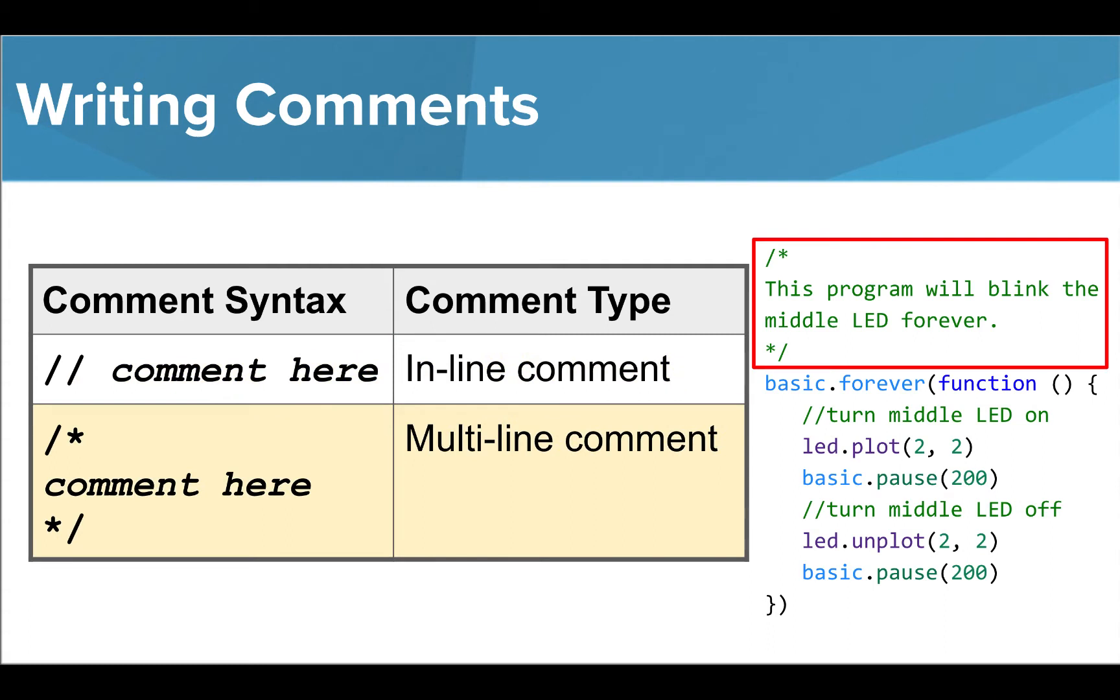Multiline comments should be used at the beginning of your code to describe the problem that the code is solving. To write a multiline comment, we type a forward slash and an asterisk, and then start our comment on the next line.